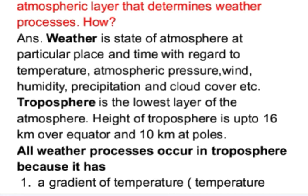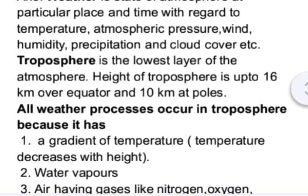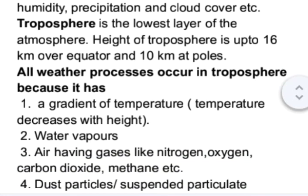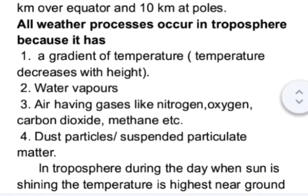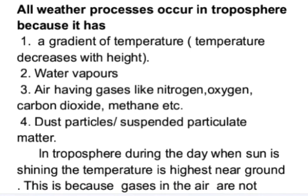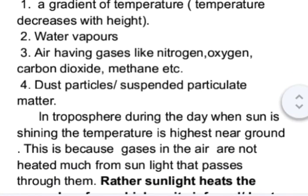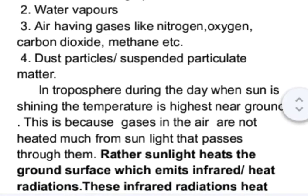All weather processes occur in the troposphere because it has a gradient of temperature — in the troposphere, temperature decreases with height. The troposphere contains water vapors and air with gases like nitrogen, oxygen, carbon dioxide, and methane. The troposphere also has dust particles, which are also called suspended particulate matter.